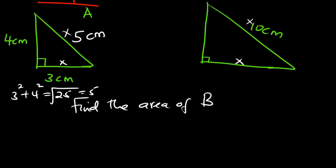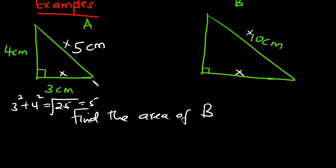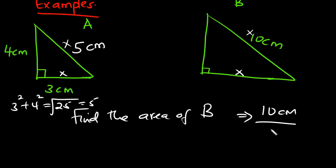Now we have the hypotenuse of triangle B (10 cm) and the hypotenuse of triangle A (5 cm). To find the scale factor used to enlarge triangle A into triangle B, we divide 10 by 5, which gives us 2. So triangle A has been enlarged by a linear scale factor of 2.